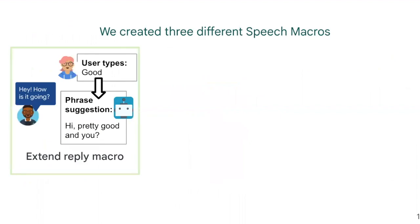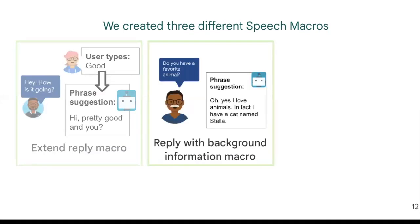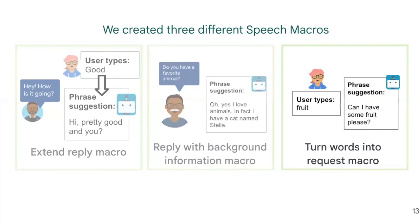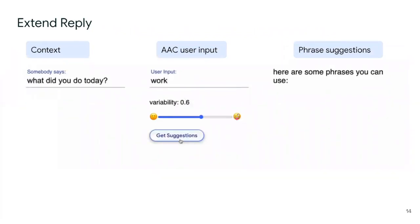Our speech macro concepts supported a variety of connections between user input and model output. The Extend Reply macro extends an AAC user's short reply with more details that feed an ongoing conversation. We also explored allowing users to fill out information ahead of time and use that stored information to generate suggestions in a later conversation — explored with the Reply with Background Information macro. The third macro turns a keyword into a help request, conveying how large language models can be prompted to complete very specific outlined tasks. We created prototypes for each speech macro that demonstrated real-time output based on different conversational situations and user inputs.